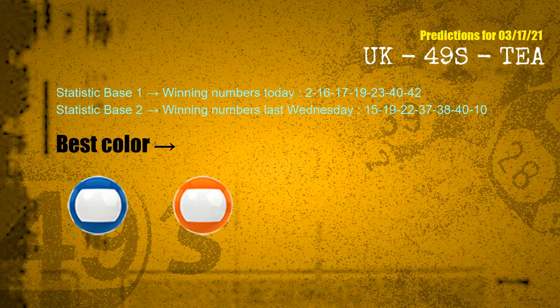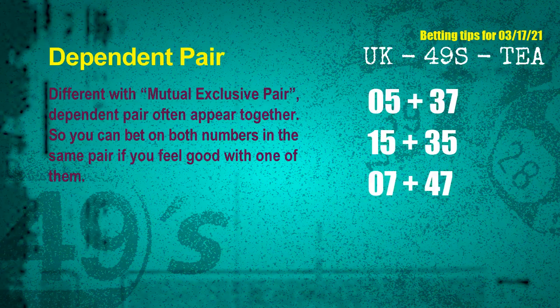According to the statistics above, with winning numbers today — 02, 16, 17, 19, 23, 40, 42 — and winning numbers last Wednesday — 15, 19, 22, 37, 38, 40, 10 — the frequent following colors are blue and orange. Some numbers are mutual exclusive, some are dependent. Numbers in the same dependent pair, you can bet on both, because they are often drawn in one draw. The dependent pairs for next draw are: first pair 05 and 37, second pair 15 and 35, third pair 07 and 47.